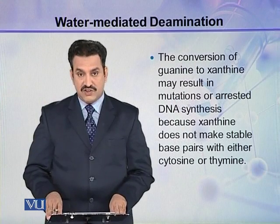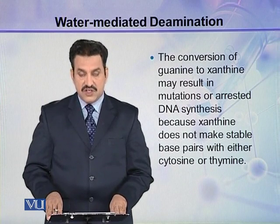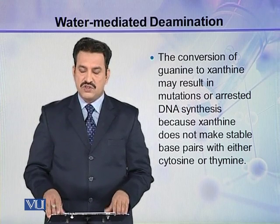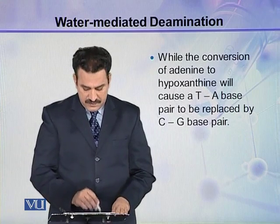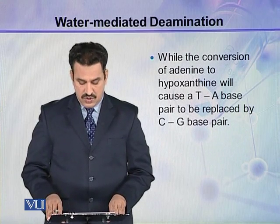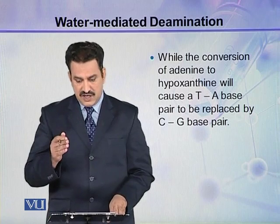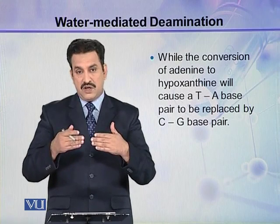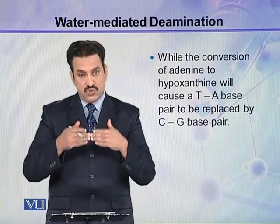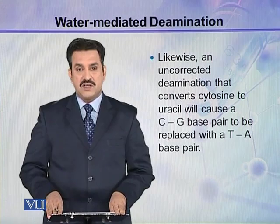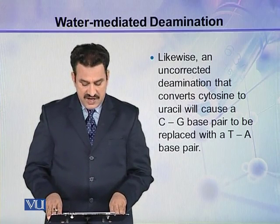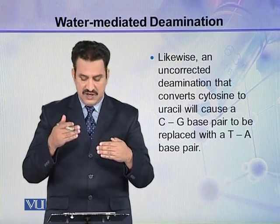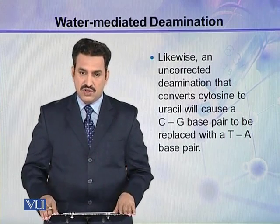The conversion of guanine to xanthine may result in mutation or arrested DNA synthesis, because xanthine cannot make stable base pairs with either cytosine or thymine. The conversion of adenine to hypoxanthine will cause a T-A base pair to be replaced by a C-G base pair, which is a mutation. Likewise, an uncorrected deamination converting cytosine to uracil will cause a C-G base pair to be replaced by a T-A base pair, also resulting in mutation.